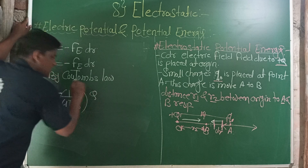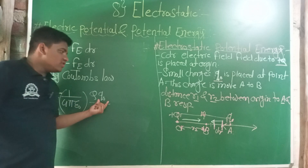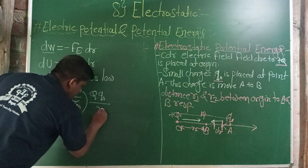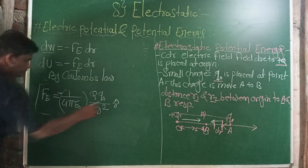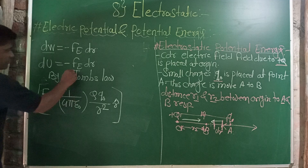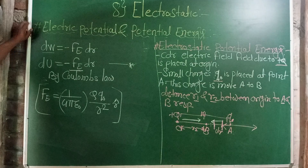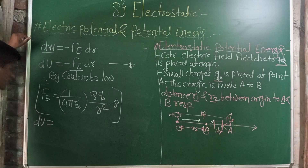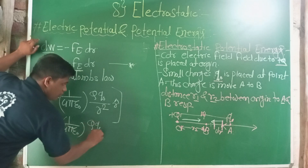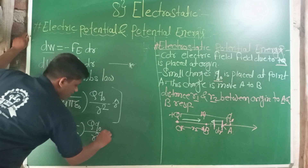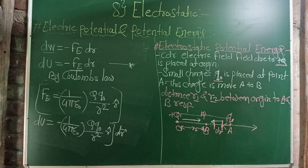By Coulomb's law, F_E is equal to (1/4πε₀) × (Q × q₀) / R², where Q is one charge, q₀ is the other charge, and R is the distance between them. Coulomb's law states that the force of attraction or repulsion between two charges is directly proportional to the product of the charges and inversely proportional to the square of the distance between them, acting along the line joining them.